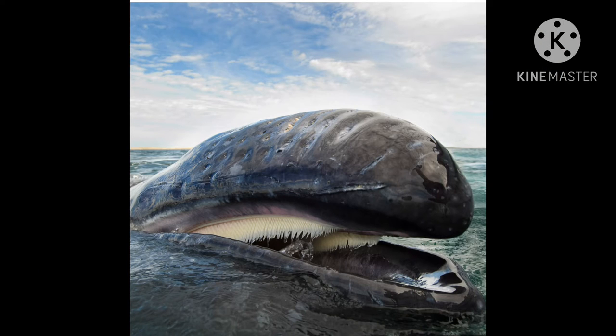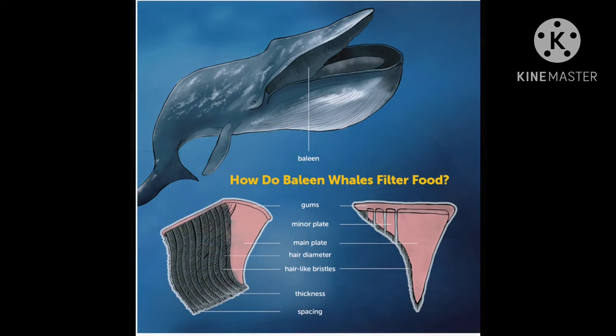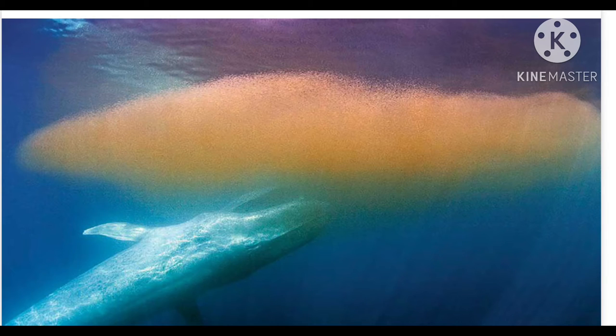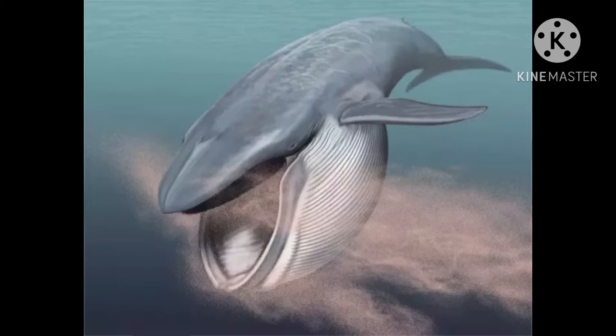For our project, we decided to mimic a whale's baleen. A baleen is what toothless whales use in place of teeth to filter food in the sea. A whale opens its mouth and sucks krill in. The krill gets stuck in the baleen, and the whale uses its tongue to push out the water, leaving it with a mouth full of krill.